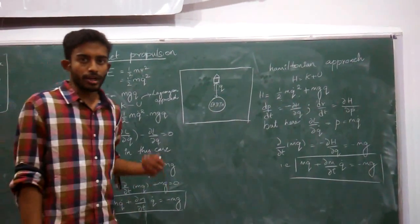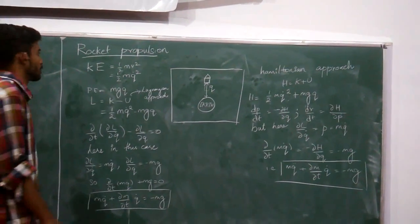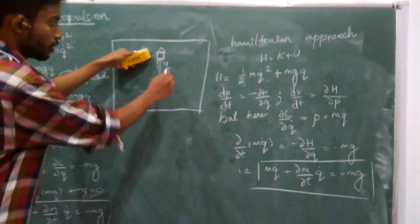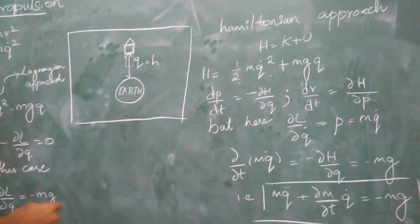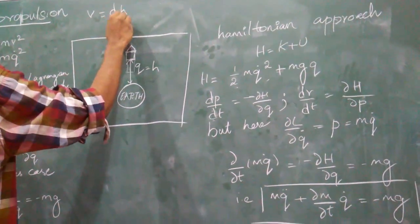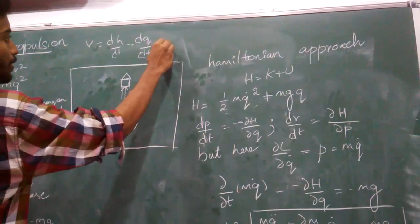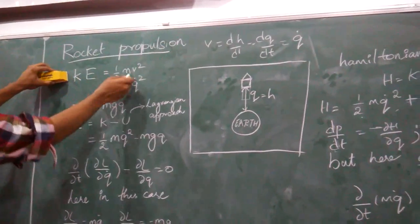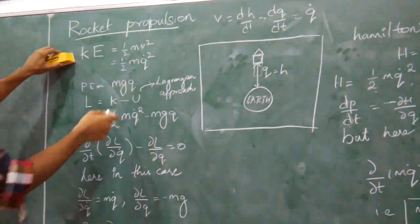Now let us derive the equation of motion of rocket propulsion using Lagrangian and Hamiltonian. Consider a rocket at height q from Earth. The velocity of the rocket is dq/dt = q̇. The kinetic energy of the rocket is T = (1/2)m·q̇².